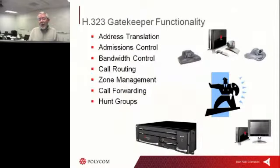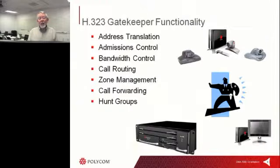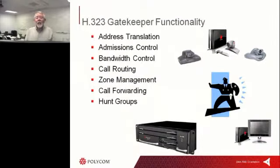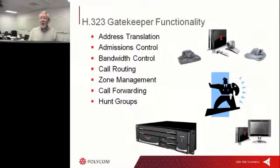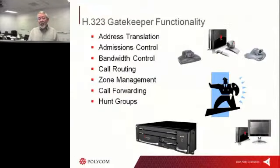Some of the H.323 gatekeeper functions that come with DMA include address translation — one of the key features of a gatekeeper — which allows you to take an E.164 address or an alias and translate it back to a real IP address. It also has CAC, or call admission control capability, so it can limit who can or cannot take a call. It also serves as a bandwidth administrator.